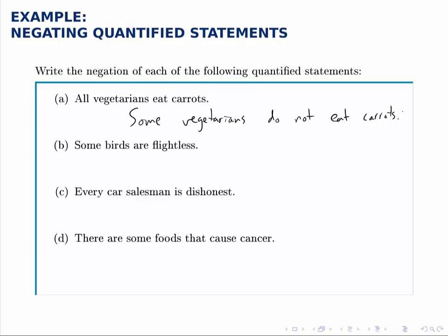You could also say 'at least one vegetarian does not eat carrots,' or other variations on that. But notice the key: we negate the statement about eating carrots, and we change 'all' to 'some.' So to negate a universal quantifier, we write an existential one.